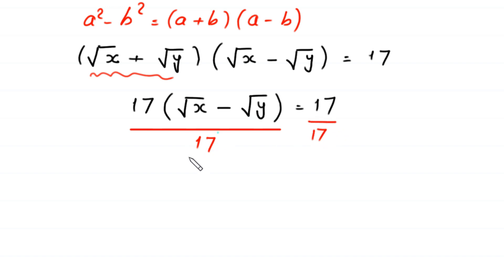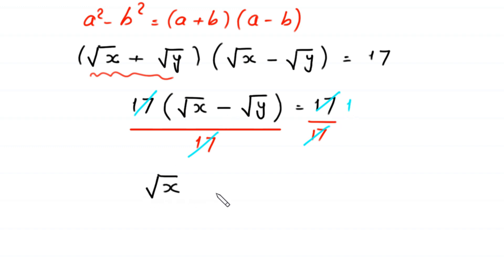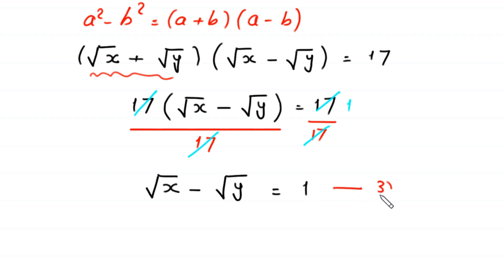The 17s cancel on both sides, leaving us with square root of x minus square root of y is equal to 1. We name this equation 3.